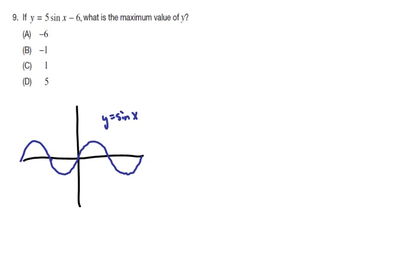Second, we know that the multiplier 5 times sine x is going to affect the amplitude of the function, but not its period. And it doesn't affect the horizontal shift or the vertical shift of the function itself.